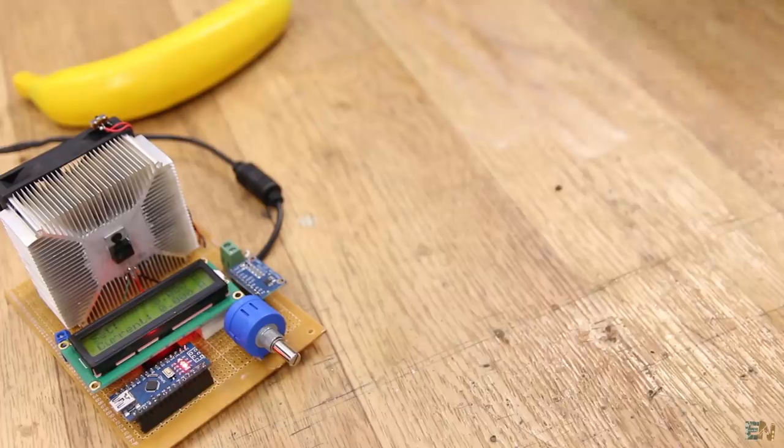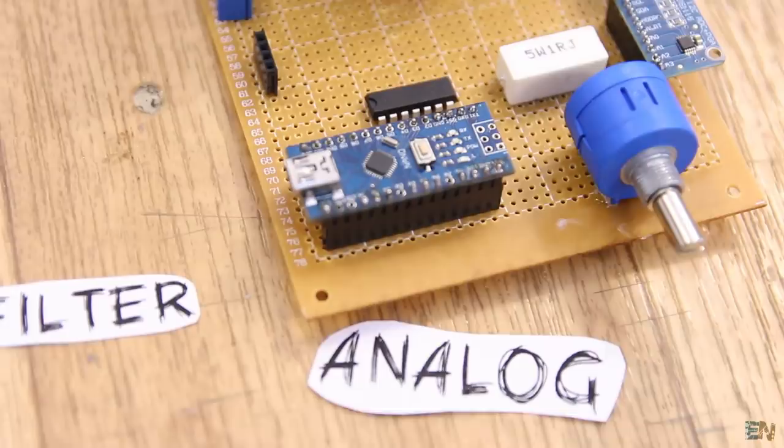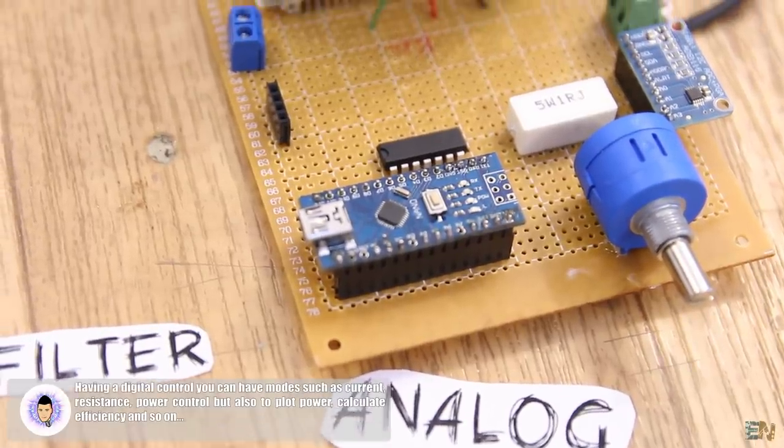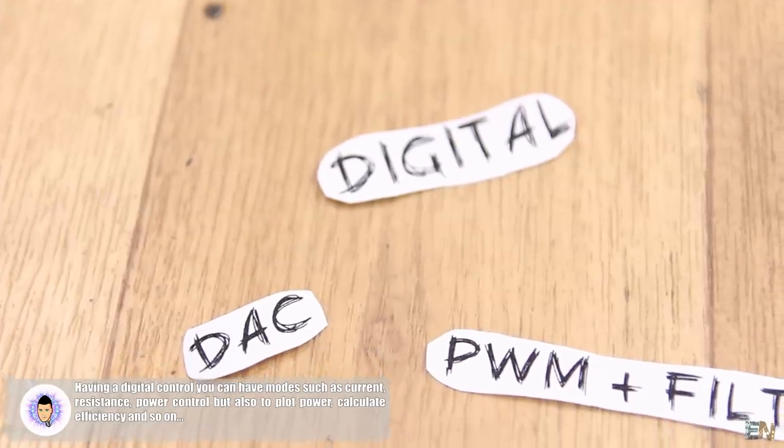So now I can test the efficiency of my power supply, for example. In the future I would like to create a digital constant load device and be able to add different modes such as constant load, constant current, constant power, and so on.